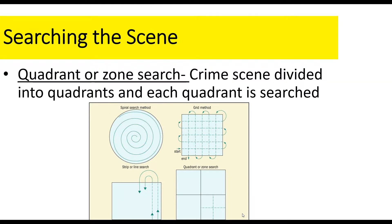The quadrant search is also sometimes known as the zone search. As you can see in the picture, the crime scene is divided into quadrants. This is great if you have multiple investigators because you can divide up the crime scene and have each individual focus on one quadrant. Sometimes a quadrant is further subdivided into smaller quadrants, as shown in the bottom right picture. All of these search patterns share the same goal: to find the evidence.